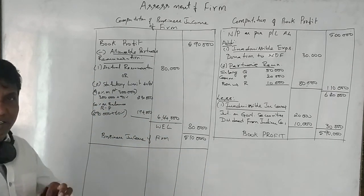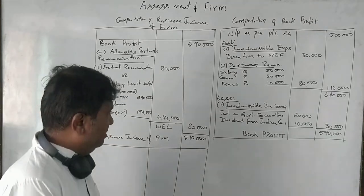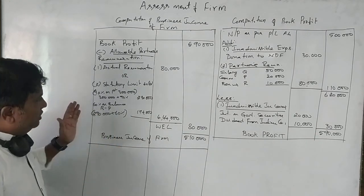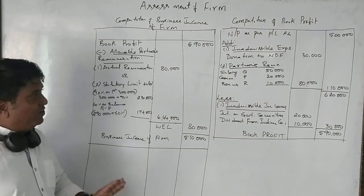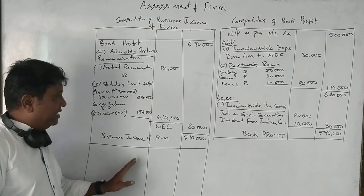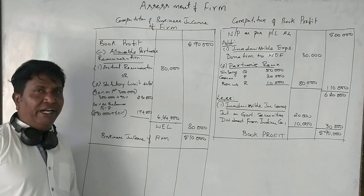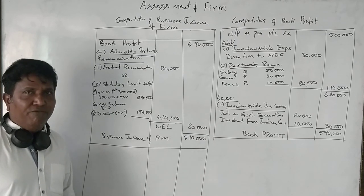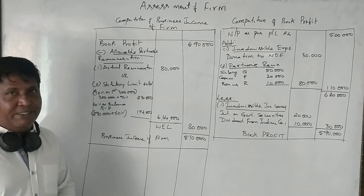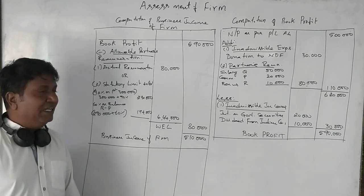It's a very simple question but with many calculations, so it seems a bit bigger for a 6-mark question. But once you understand the concept, you can do it easily. First find the book profit, then find the Business Income of the firm. If you like this video, please share and subscribe to my channel, and ask your friends to subscribe and forward these videos to as many friends as possible. Thank you so much.